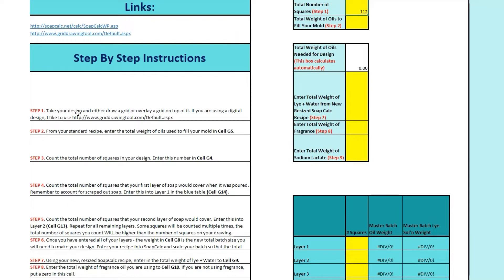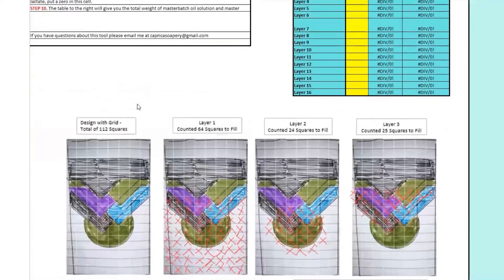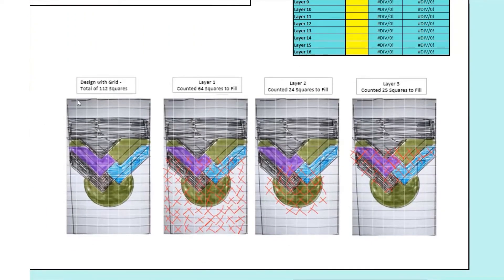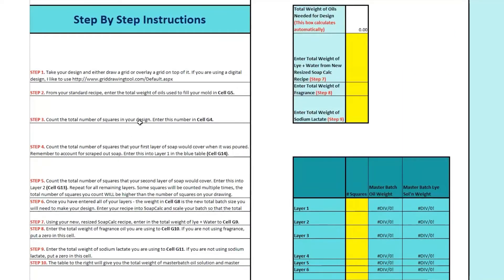For step one, you want to take your design and either draw a grid by hand or overlay a grid on your computer on top of it. If you're using a digital design, I like to use that link, which will add a grid for you. I've gone ahead and done that from a picture I took on my phone of a drawing of my design. I kind of cropped it to a rectangular shape, and I used that grid tool to make little boxes over top. I've only done the first couple of layers here in this illustration. Step one: draw your grid — we've done that.